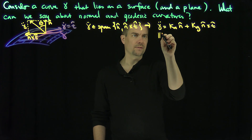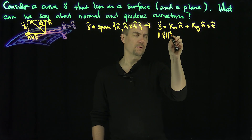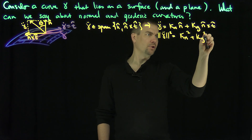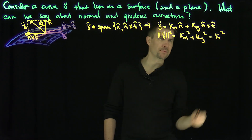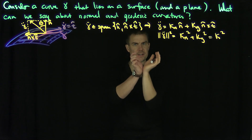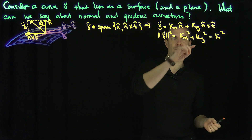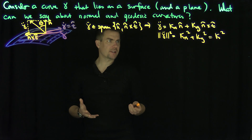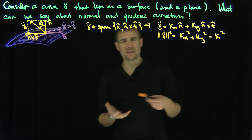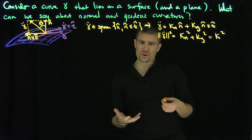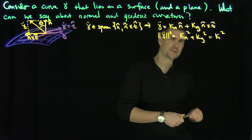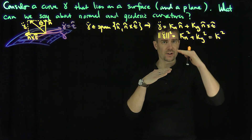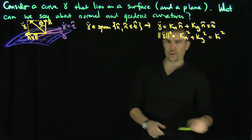So what can we say? If I take the length squared of this, we get kappa_n squared plus kappa_g squared, which equals kappa squared. So in other words, I'm orthogonally decomposing the components of the curvature of the curve into these normal components and geodesic components. One obvious consequence: I want to figure out when I can zero out these things, and when can I optimize kappa_n or kappa_g to make them as large as possible.